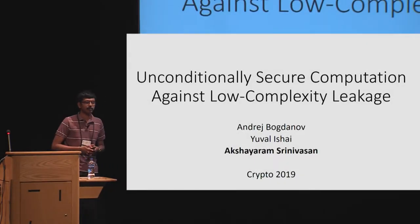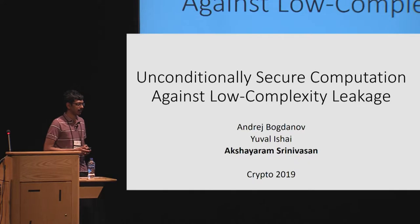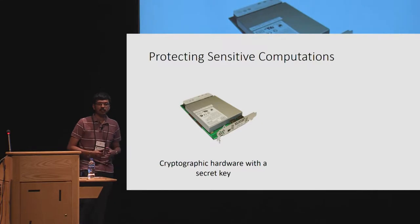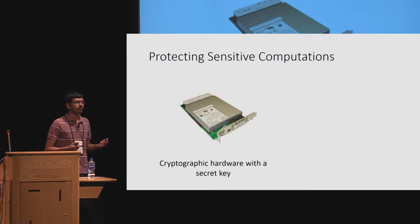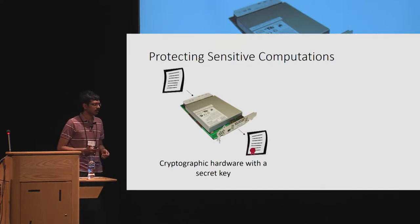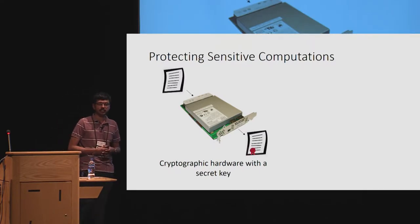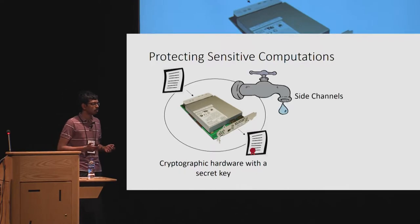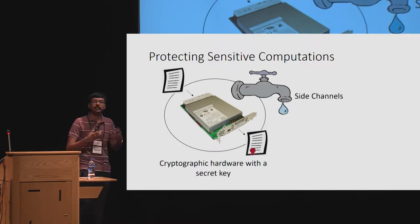I'm going to talk about unconditionally secure computation against low complexity leakage. Let me start by giving you a scenario. Say you have a piece of cryptographic hardware with some secret key embedded inside. This hardware might be used to perform sensitive computations such as digitally signing your financial transactions. Even though this hardware may not be faulty, and the cryptographic algorithms implemented are in fact secure, there might be other means through which an attacker might be able to extract information about the secret key inside this hardware.